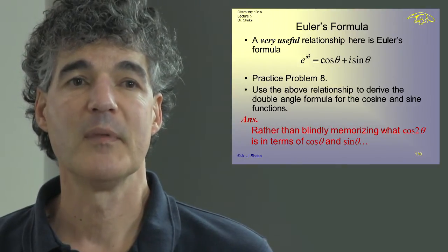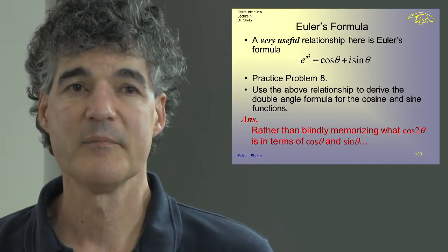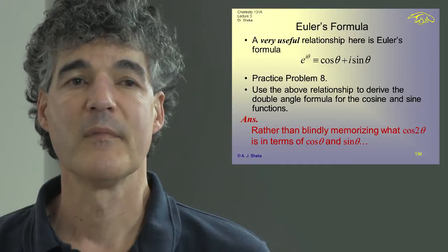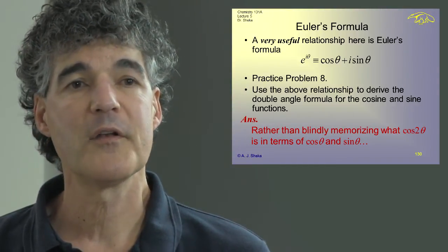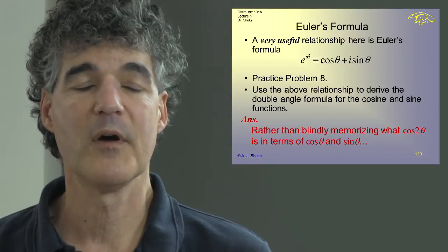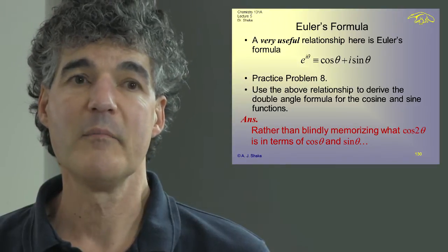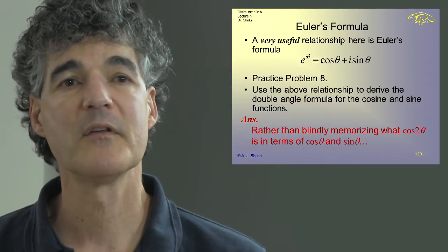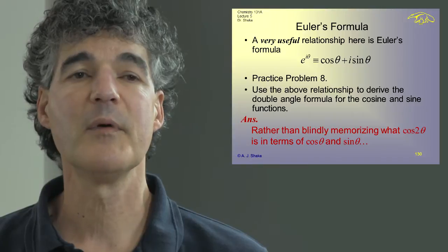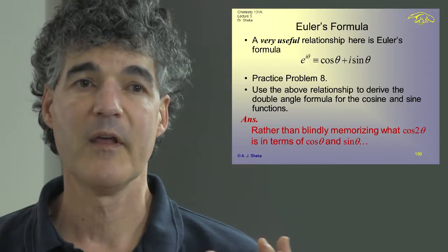Let's do a practice problem. Using e^(iθ) = cos θ + i sin θ, we'll derive the double angle formulas for cosine and sine. We want to express cos(2θ) and sin(2θ) in terms of cos θ and sin θ. Rather than memorizing formulas, we'll use properties of exponentials—all we need to remember is that i² = -1.